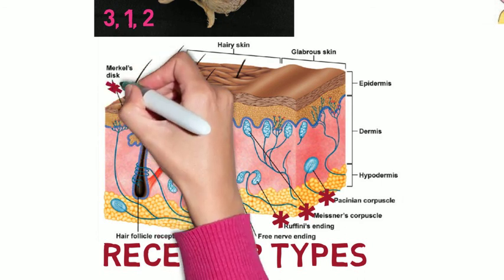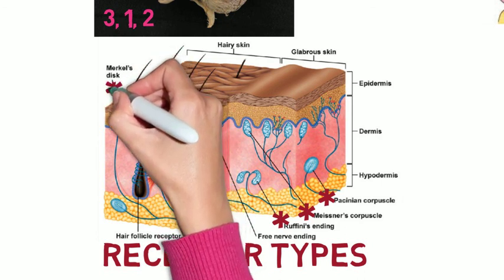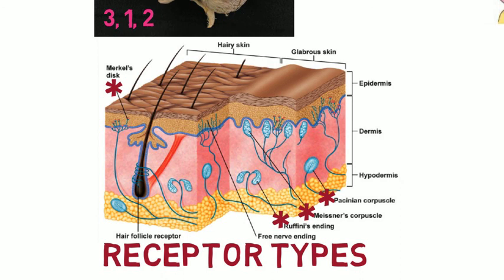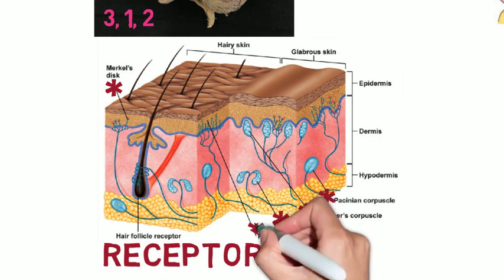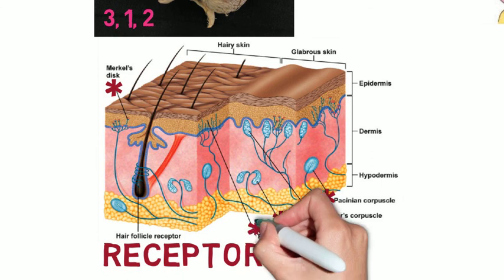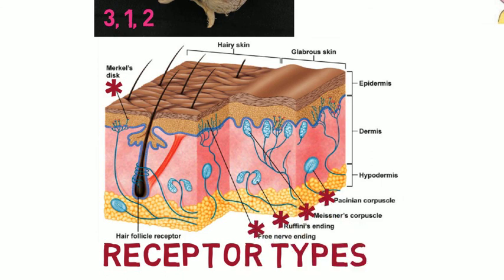Merkel's discs detect pressure and texture, are slowly adapting, and have a sustained response. Merkel's discs allow for fine spatial separation and two-point discrimination. Polymodal nerve endings, or free nerve endings, are unspecialized nerve endings essentially used to detect pain, and have many different rates of adaptation, stimulus modalities, and fiber types.